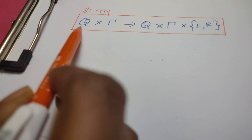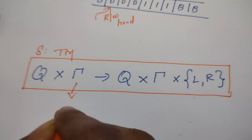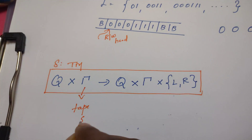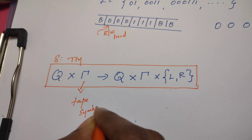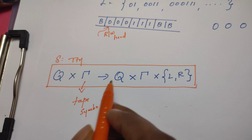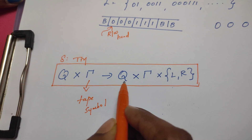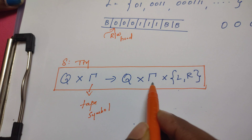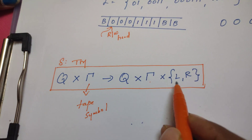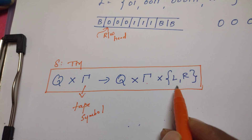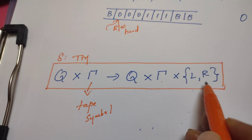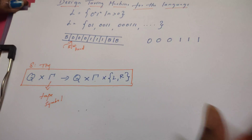Let us recollect the transition function of a Turing machine. From a given state, it reads a tape symbol from the input tape. The Turing machine may then change its state, write contents onto the input tape, and move the read/write head in the left or right direction.